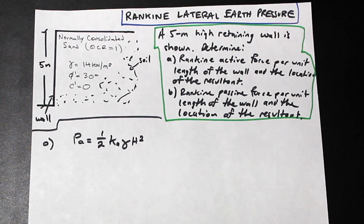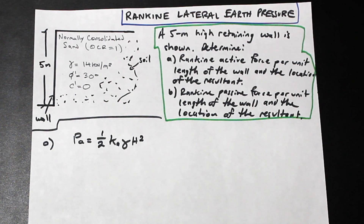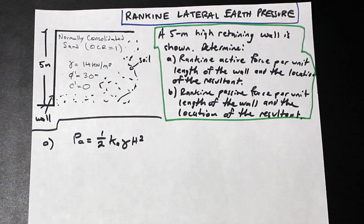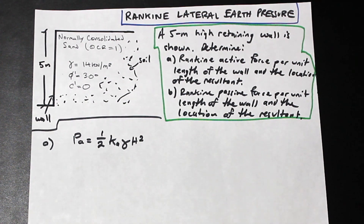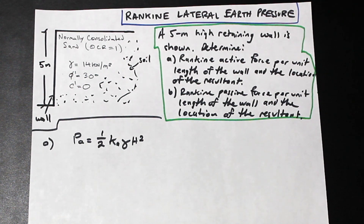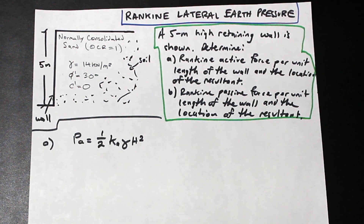What Rankine's lateral earth pressure is essentially is either the wall is exerting pressure on the soil, or the soil is exerting pressure on the wall, and we're going to measure the pressure that is on the wall as a result of that. So let's go ahead and get started.